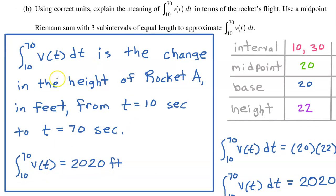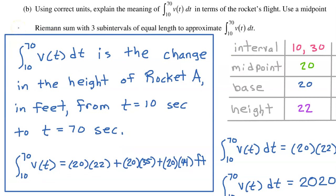This is how I would show my final answer for Part B. I would actually recommend leaving your answer in the unsimplified form: 20·22 + 20·35 + 20·44. This is a non-calculator problem, so you risk making a careless arithmetic error doing all this multiplication by hand. Since the unsimplified form is a perfectly acceptable answer, why spend the time? Just remember to always include your units.